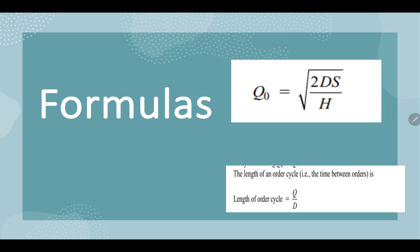How to find out Q? Q is under root of 2DS by H. D is your annual demand, S is your ordering cost, H is your holding cost.